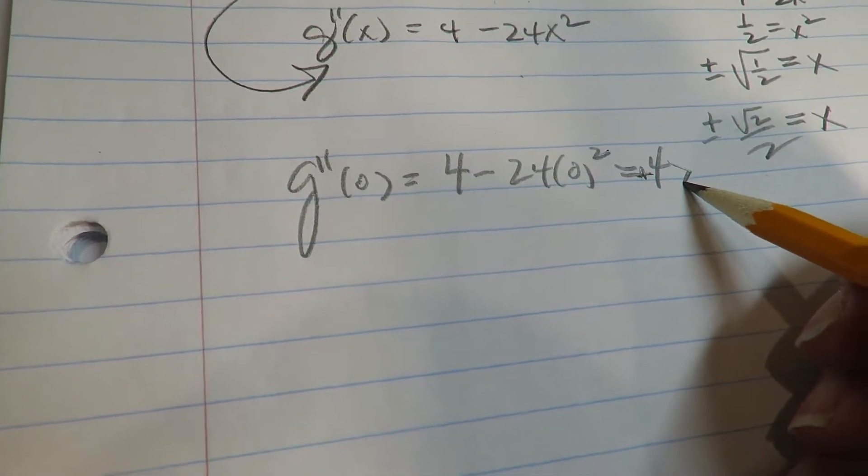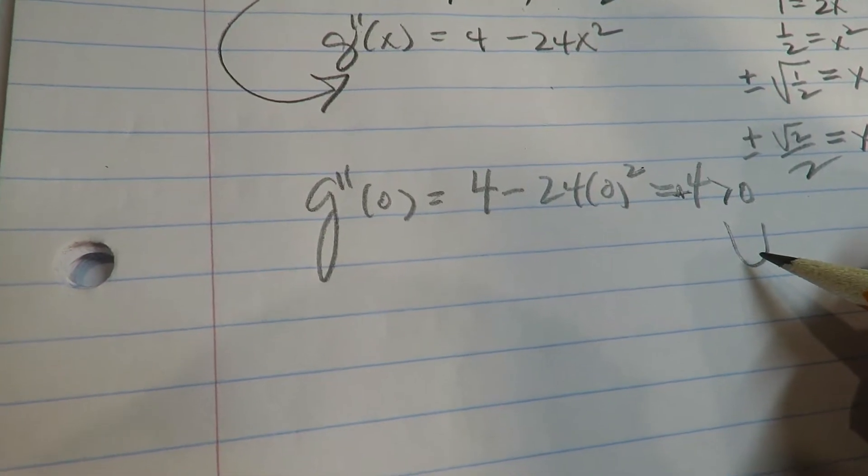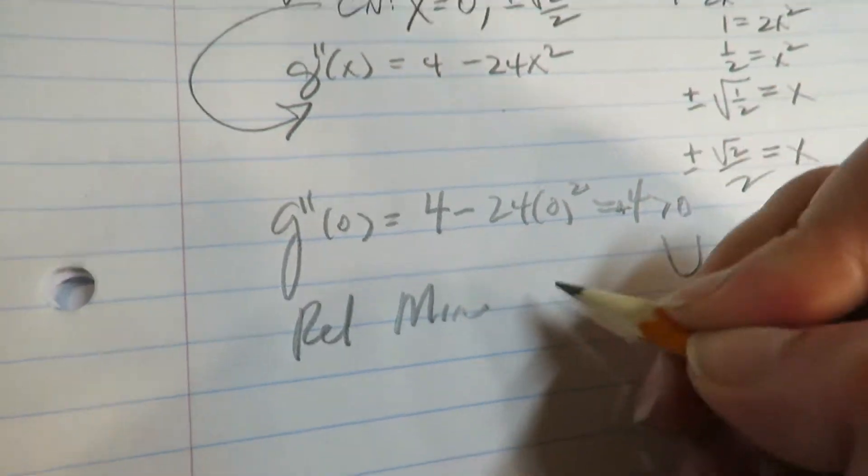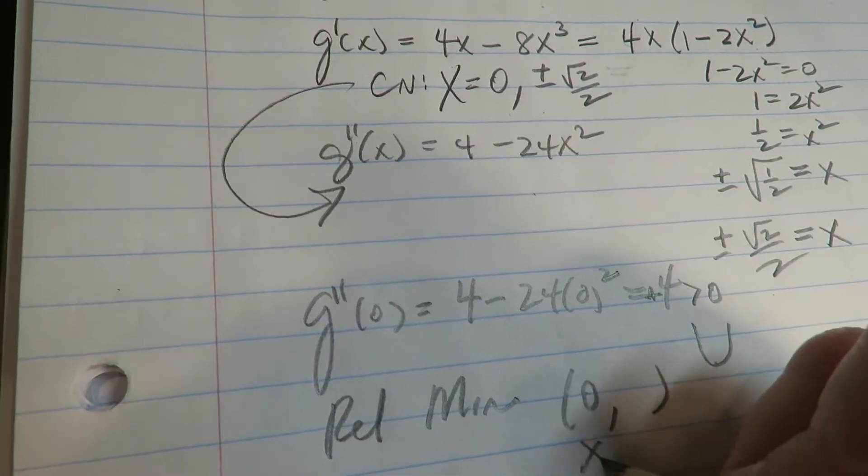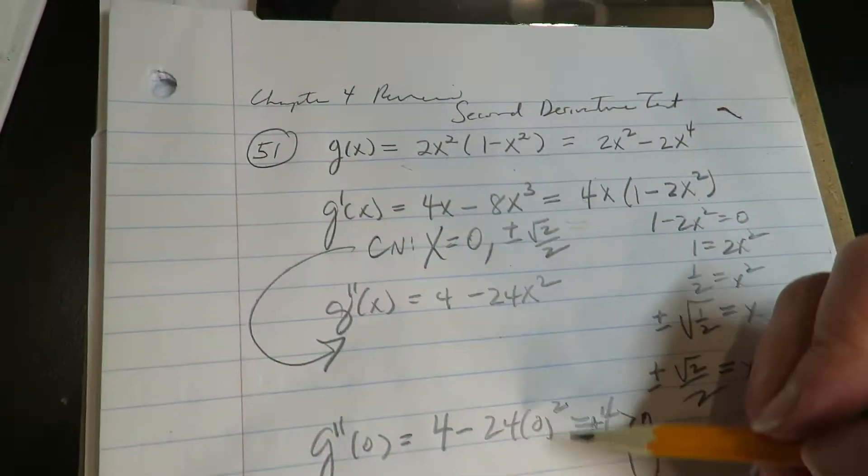you plug in zero, you get 4. The significance is not the 4, the significance is that it's positive. Right, so if it's greater than zero, that means it is concave up, which means it's a relative minimum at zero. And I want you to find the actual x,y coordinate, so remember